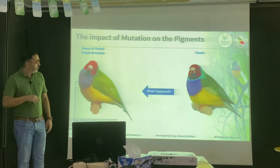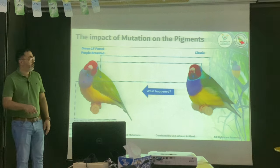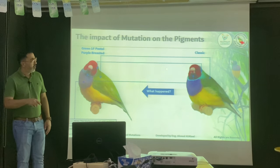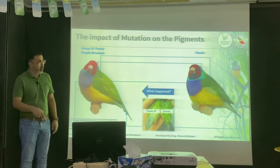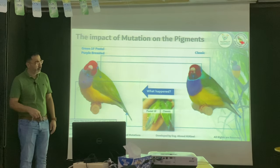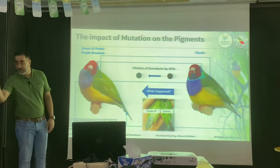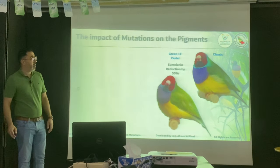The black — what happened to it? Dilute, and then you break. Let's say 50%. Things to watch out for are the back and then the black, which is obviously here, and I also have the aqua band. The aqua band also became very less. This is how a classic back looks like, and this is the pastel single factor. Even if you look at the black in the tail, it became gray. This is the result of eomelanine dilution by theoretically 50% — the black became gray.